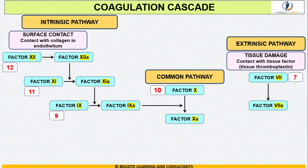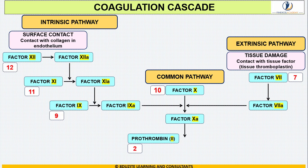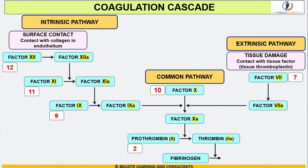Contact with tissue factor or tissue thromboplastin occurs, and once this happens, circulating Factor 7 gets activated to Factor 7a. Factor 7a converges on the common pathway and activates Factor 10 to Factor 10a. This extrinsic pathway is a relatively shorter pathway. Activated Factor 10a then activates prothrombin (Factor 2) to thrombin (Factor 2a), and thrombin in turn converts fibrinogen to insoluble fibrin, causing clotting.